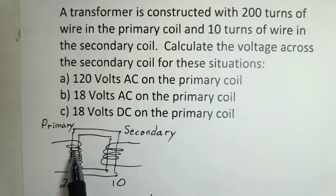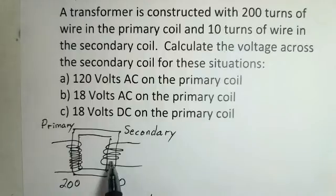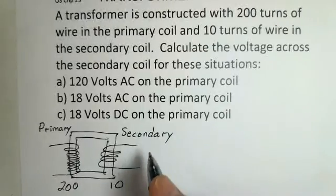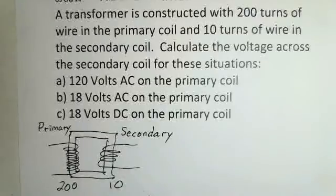That's going to generate a changing magnetic field in the iron. The iron is going to route most of that magnetic field over to the secondary coil. And we'll have a changing magnetic field through the secondary coil. That's going to produce a change of flux in this coil and there'll be an induced EMF and a current on the secondary coil.